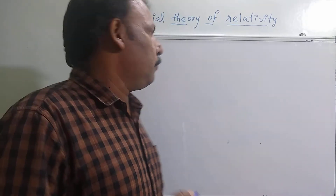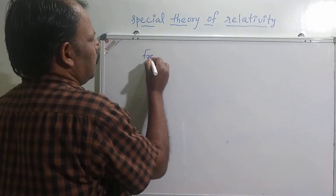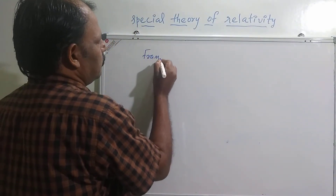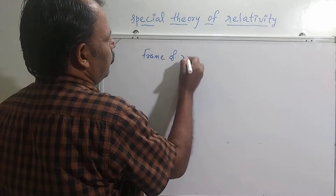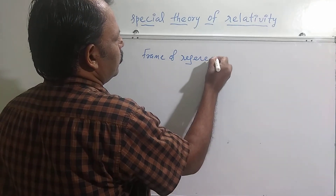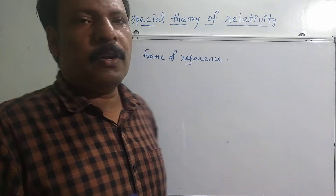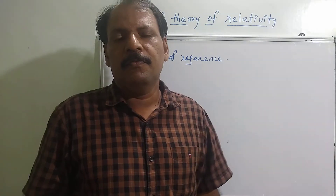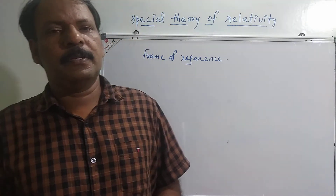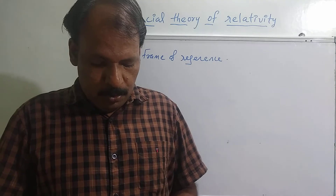The reference object with respect to which the motion of an object is specified is called a frame of reference. So a frame of reference is an object with respect to which we can specify the motion of an object.